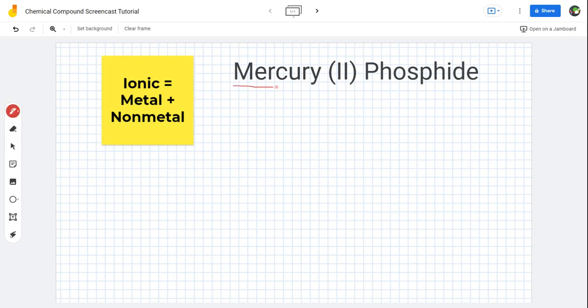If you were to look at mercury on the periodic table, you wouldn't be able to see the charge because it's a transition metal. Transition metals can have various charges, but in the name, we have the Roman numerals that let us know what mercury's charge is. So mercury, Hg, has a charge here of positive 2.